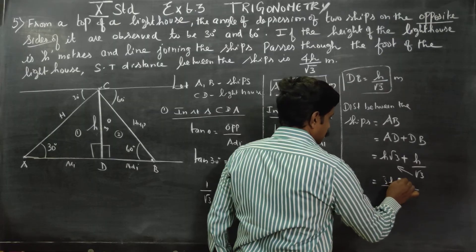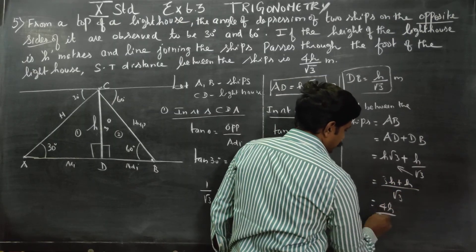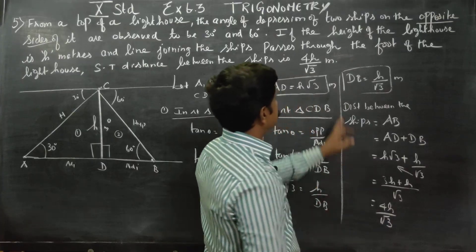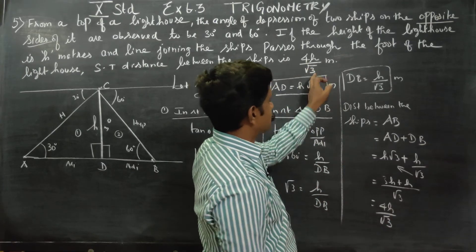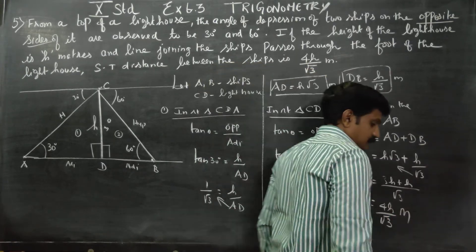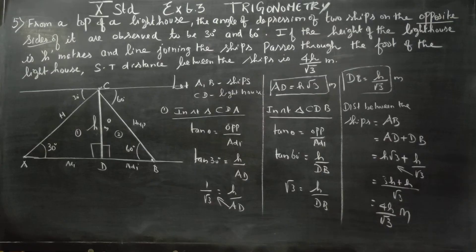So 3H + H = 4H, giving AB = 4H / √3 meters. This is your final answer.